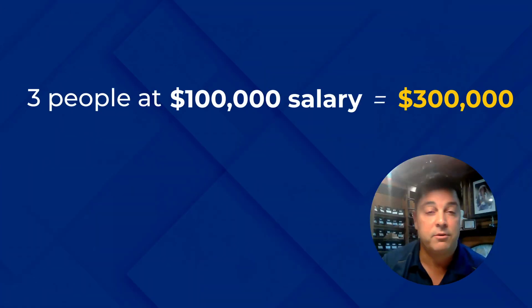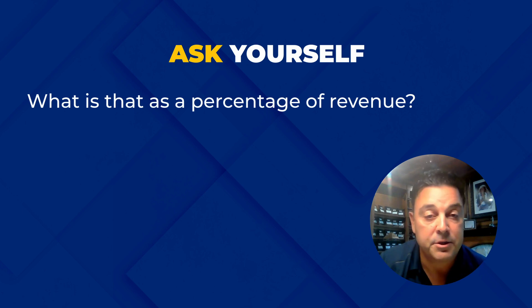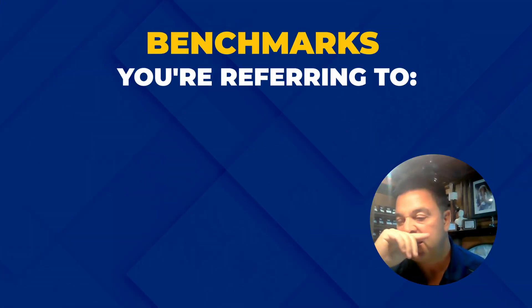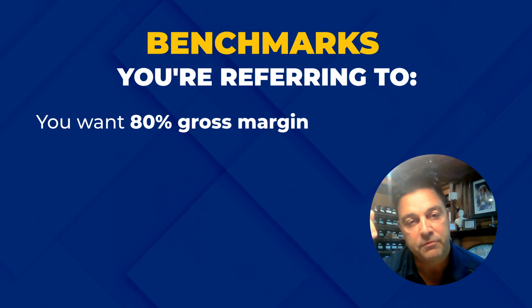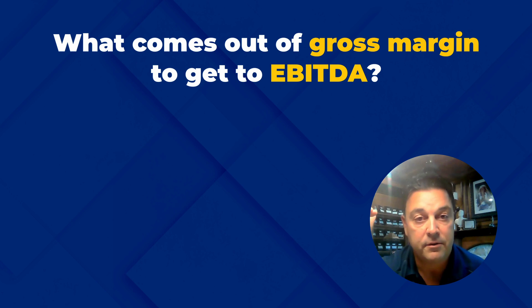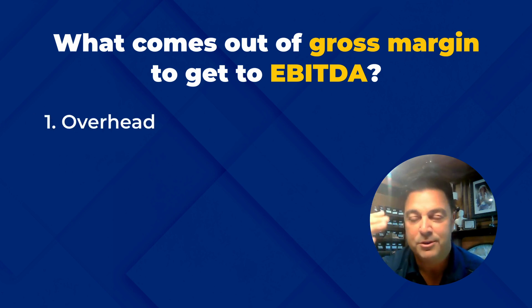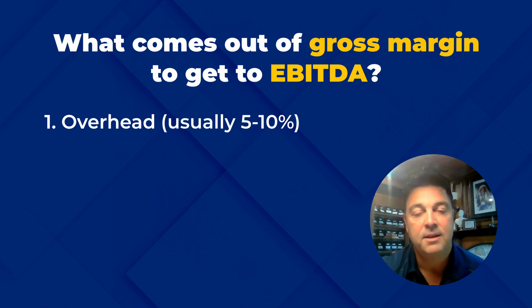With the budget, you can then say, if I need three people at $100,000 each, that's $300,000. What is that as a percentage of revenue? How do I feel about that? The way you stress-test that number against your goals — the benchmarks you're shooting for — is you want an 80% gross margin and a 50% EBITDA margin. The sales cost comes out between gross margin and EBITDA. So if you have an 80% gross margin and you're trying to get to a 50% EBITDA, what comes out of gross margin to get to EBITDA is two things: overhead, which is usually 5% to 10% in a boutique, and sales and marketing costs. You can back into maybe a 20% number, and that might be a way to reverse engineer your budget.